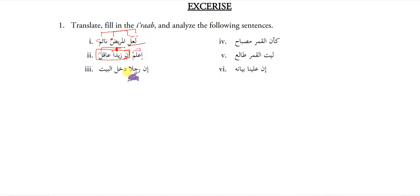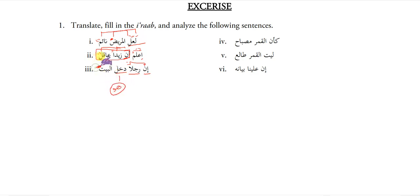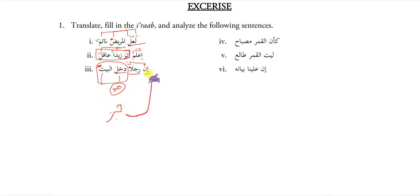And then Juml-e-failiya. Anna: huruf-e-mushabbabil fail. Rajulan: ism of Anna. Dakhla: fail. Hua is a zamir inside it as fail. And al-bayt is mafool. Fail, fail, mafool — all become juml-e-failiya khabariya, and then khabar of Anna. Indeed, the person entered the house.